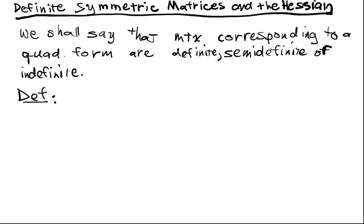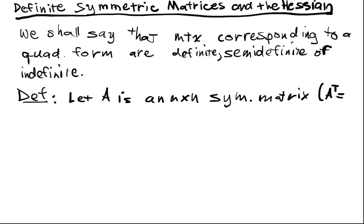Suppose A is an n by n symmetric matrix, so it's a square matrix and A transpose is equal to A. Then we say: